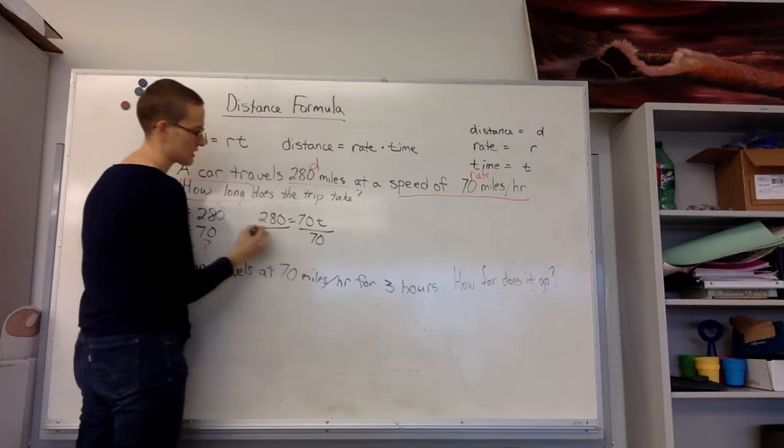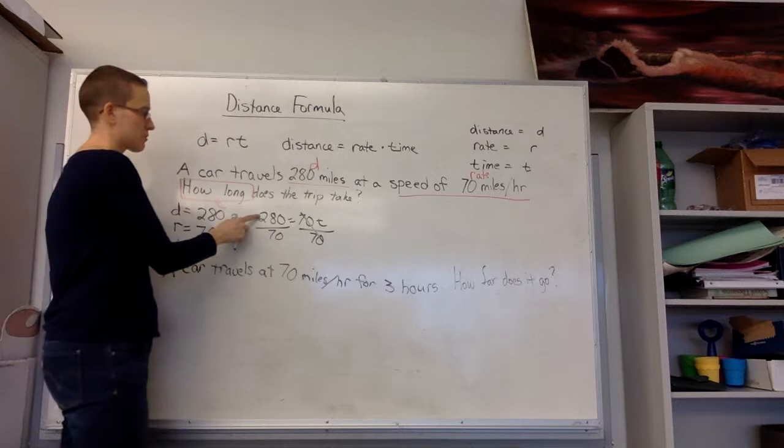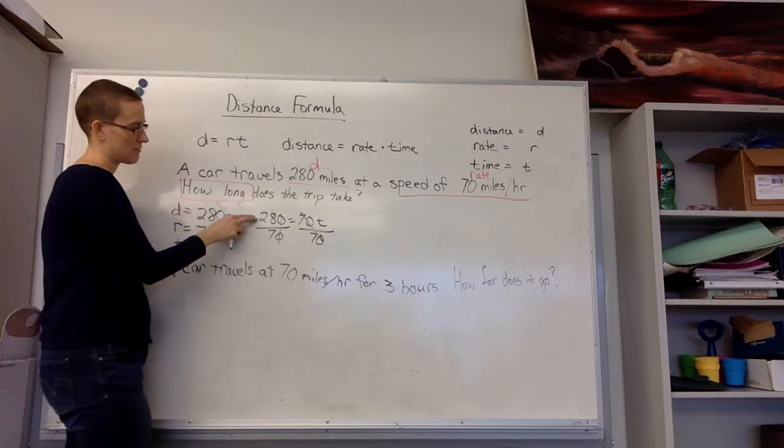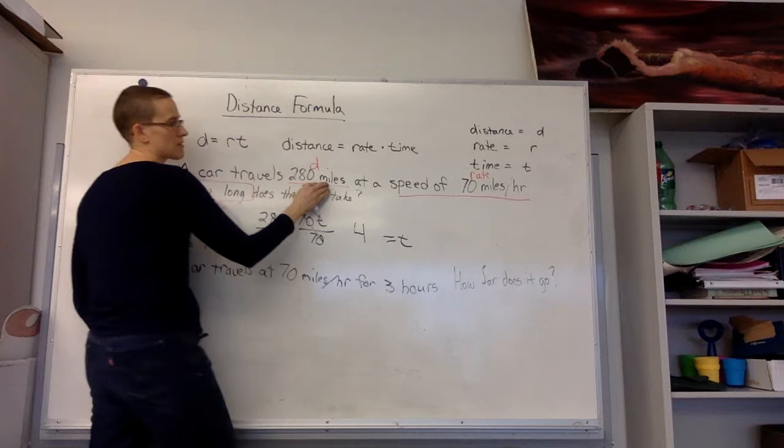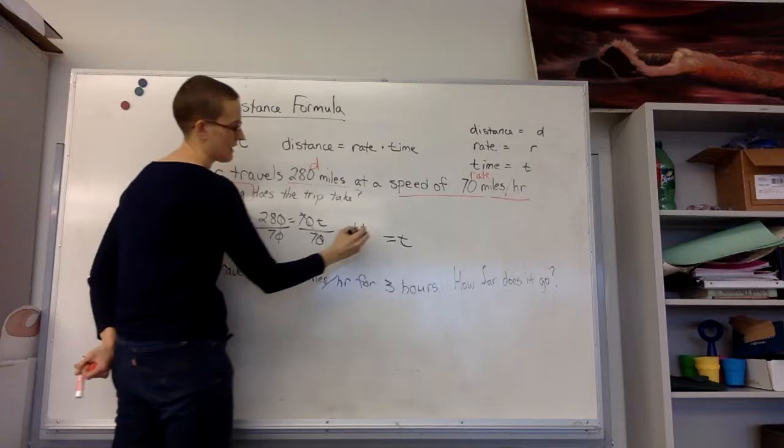My 70s cancel. If I have 280 divided by 70, I have a common zero I can cross off and use that shortcut. Then I have 28 divided by 7, and that equals 4. So 4 equals t. But now I have to see what my unit is. Up here I measured miles and miles per hour, so the unit here gives me a hint at what my time should be: 4 hours.